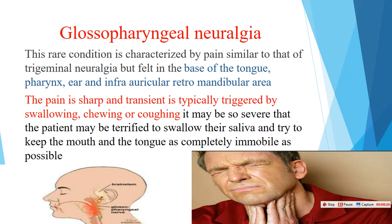Another type of neuralgia is glossopharyngeal neuralgia. This is a rare condition characterized by pain similar to that of trigeminal neuralgia, but the pain is located in the pharynx, ear, and periauricular region. The pain is sharp and transient, typically triggered by swallowing, chewing, or coughing. It may be so severe that the patient is terrified to swallow their saliva and tries to keep the mouth and tongue as completely immobile as possible. It can be distinguished from other neuralgias by applying topical anesthesia to the pharyngeal area, which relieves the pain.